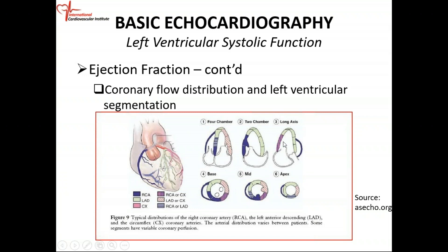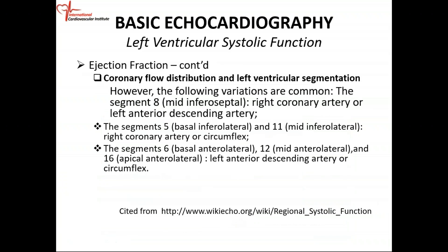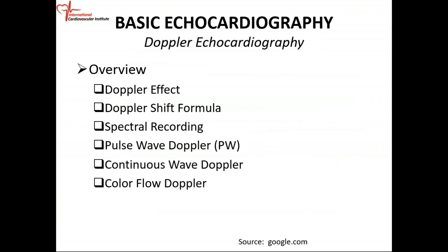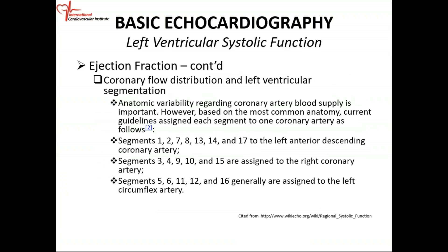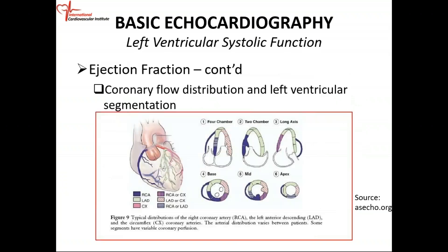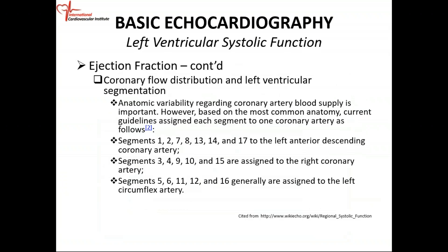So just have a basic understanding of the blood supply to the different segments. When someone comes in and a segment is not moving properly — it may be hypokinetic or akinetic — you can accurately predict which blood vessel is involved. We have completed left ventricle systolic function, having looked at all aspects of evaluating LV systolic function including wall motion and regional walls.